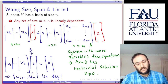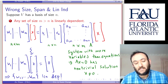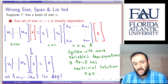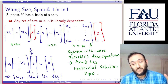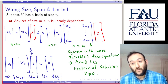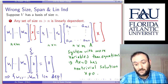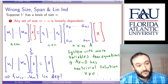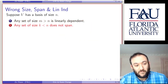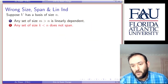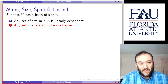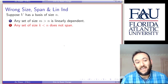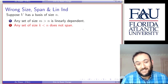So in summary: if we have a basis of size n, any larger set of vectors is going to be linearly dependent. How about a smaller set? We're going to claim that any set of size k less than n does not span our vector space.